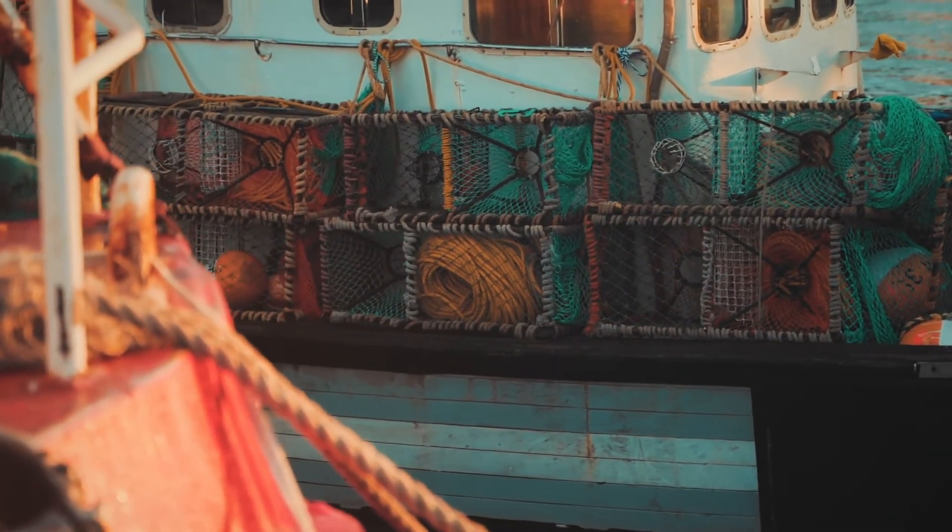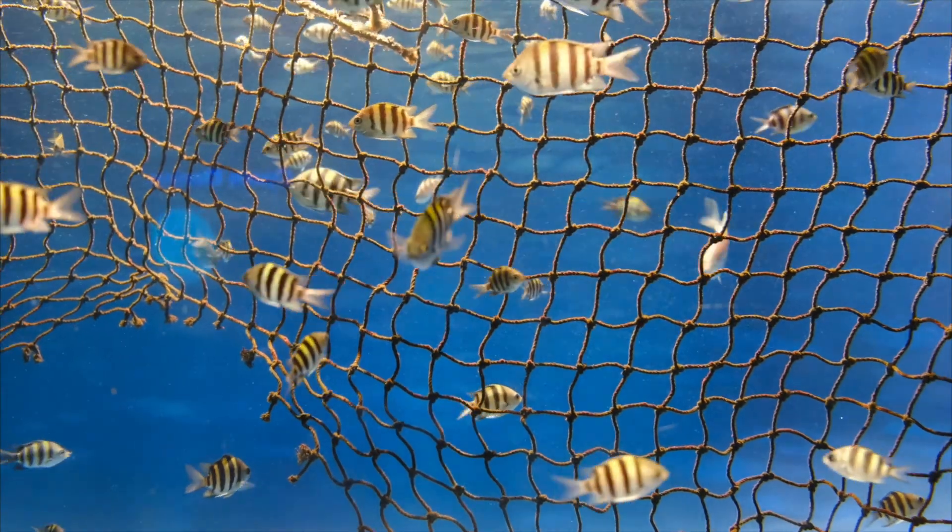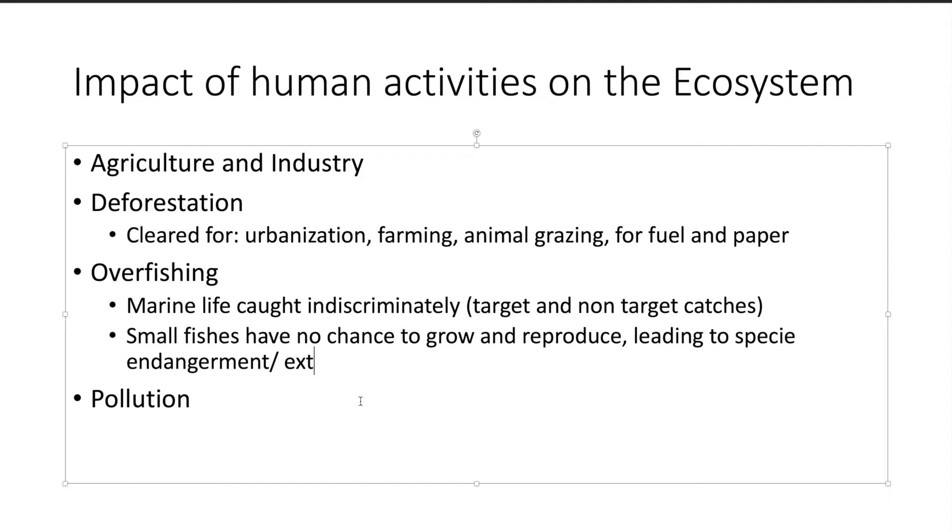Next we go on to uncontrolled fishing practices. Sometimes fishing equipment can catch marine life indiscriminately, meaning the catches will be of target and non-target fish. Some are small and young, they do not have the chance to grow and reproduce, therefore causing the population to be endangered or even extinct.